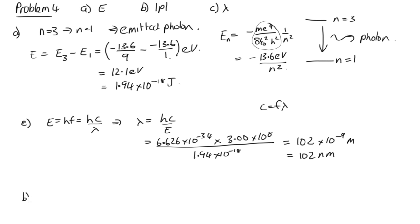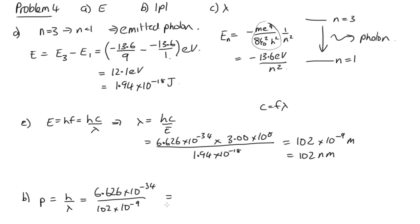For part B, to get the momentum we use p = h/λ = 6.626×10⁻³⁴ / (102×10⁻⁹) = 6.47×10⁻²⁷ kg·m/s as the magnitude of the momentum.